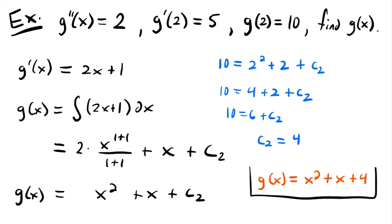So our particular solution is g of x equals x squared plus x plus 4. This is g of x — the particular solution given this second derivative and both initial conditions.